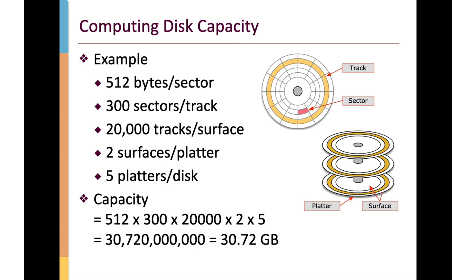Here's a simple example. Say there are 512 bytes per sector and 300 sectors per track, 20,000 tracks per surface, 2 surfaces per platter, and 5 platters per disk. Multiplying all these together — 512 times 300 times 20,000 times 2 times 5 — gives approximately 30.72 gigabytes. Again, these are disk drive manufacturer gigabytes, not computer science gigabytes.